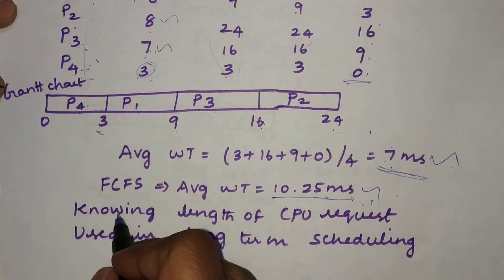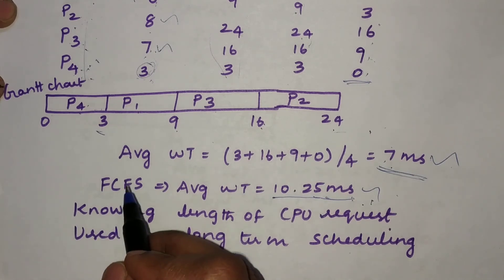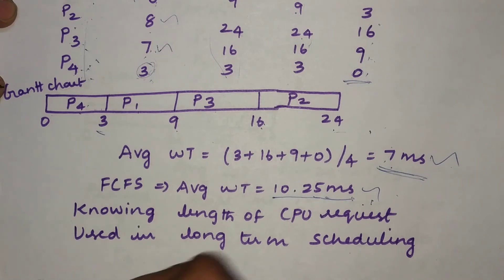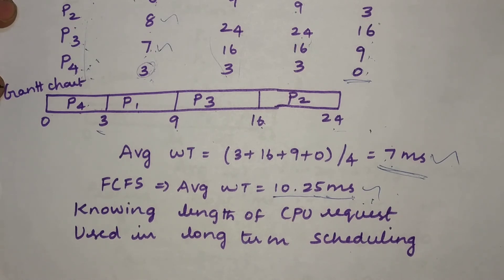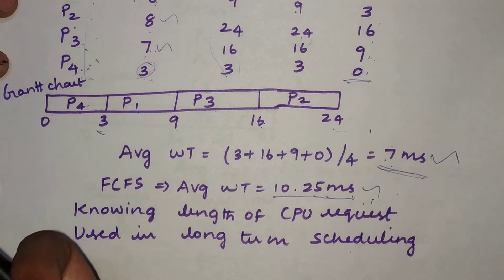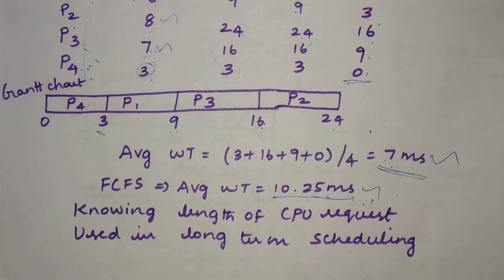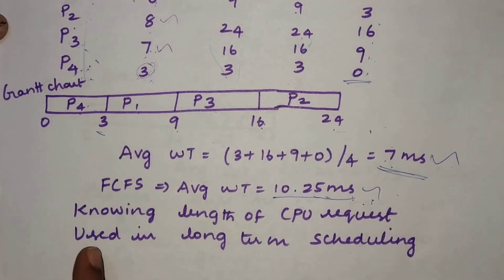A key disadvantage of SJF is that, as the name suggests, we must know the burst time of each process in advance. However, it is highly difficult to know the CPU burst length ahead of time. In a batch environment, users submitting jobs can provide an estimated process time limit, but if that value is wrong, the scheduling cannot produce an optimal result — this is the main disadvantage of SJF.